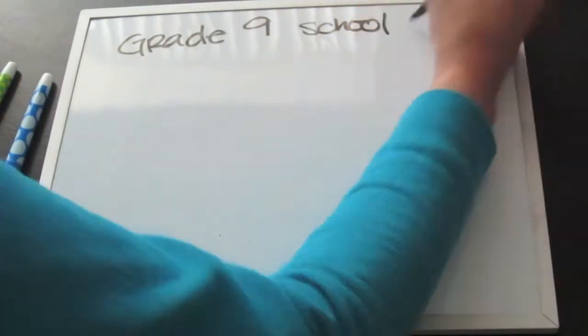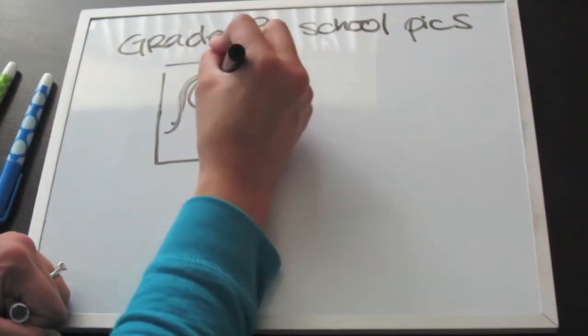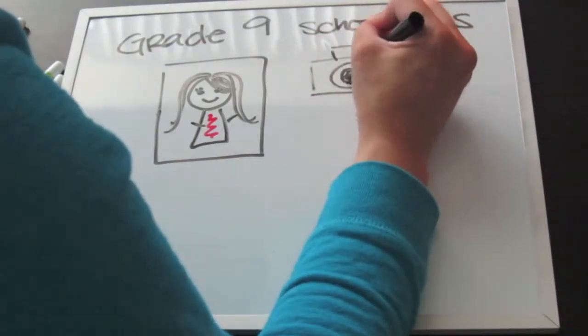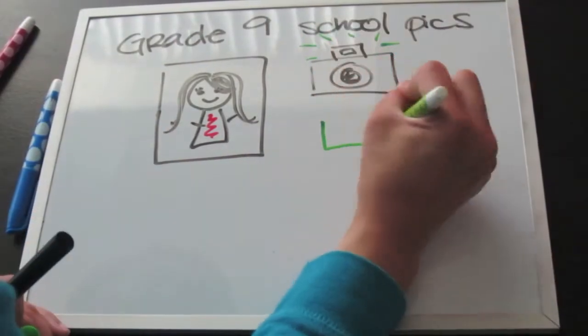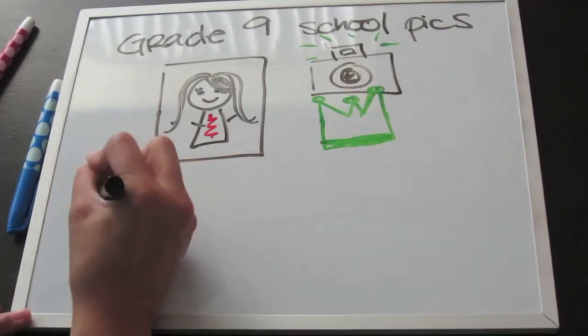By the time my 9th grade school pictures came around, I was set. My hair had grown out, I was wearing makeup, and I finally had tweezed my eyebrows. I even started taking some modeling classes and joined a couple beauty pageants just to help boost my confidence.